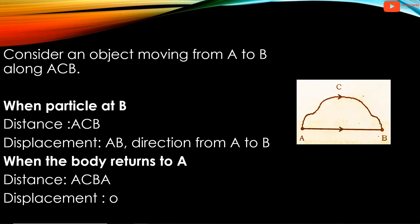Consider an object moving from A to B along path ACB. The distance traveled by the object is ACB, and the displacement is AB. That is, the shortest distance between the initial point and final point is AB, so displacement is AB.